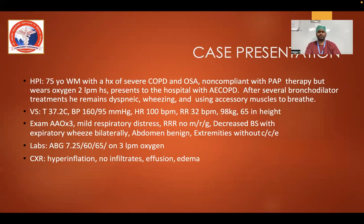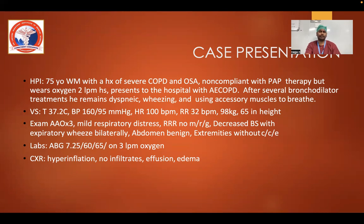Consider this case: a 75-year-old patient with severe COPD and OSA, non-compliant with PAP therapy, wearing oxygen at 2 liters per minute, presents with acute exacerbation of COPD. After severe bronchodilator treatment, the patient remained dyspneic, wheezing, and using accessory muscles to breathe. How will you manage this patient? By the end of this discussion, you will know how to manage this type of patient.